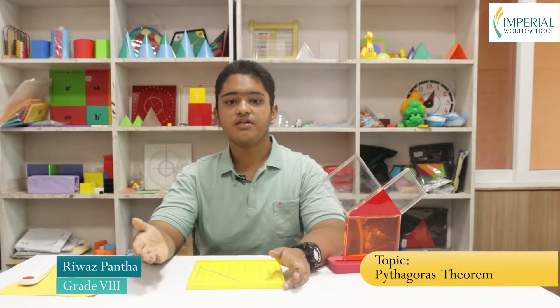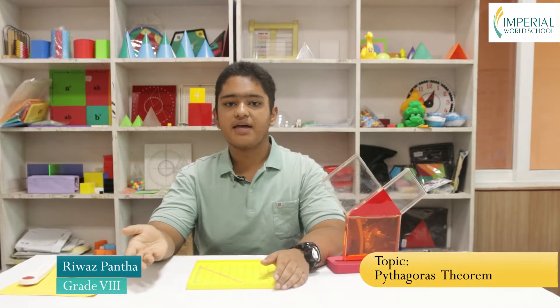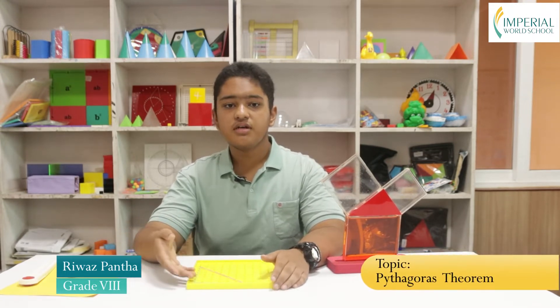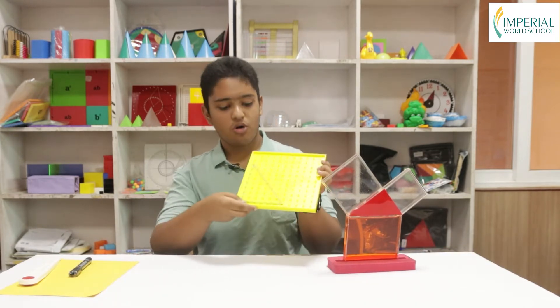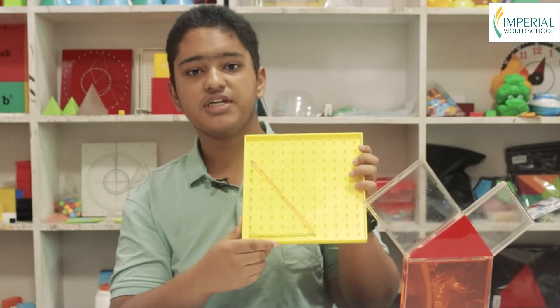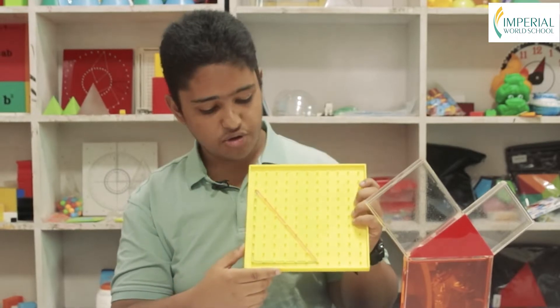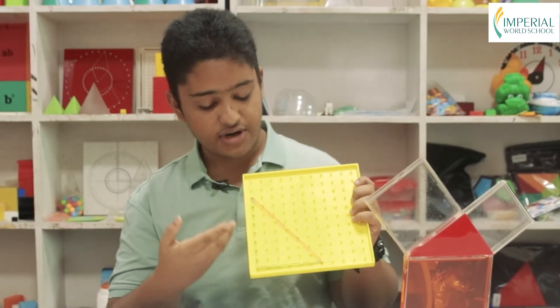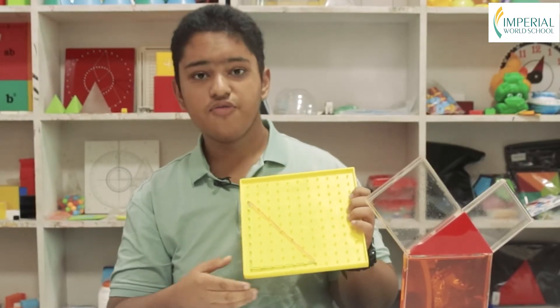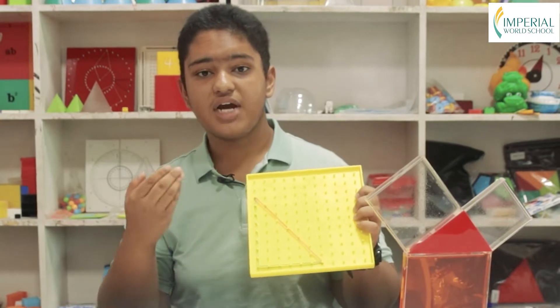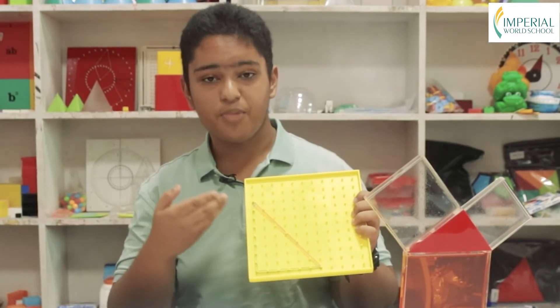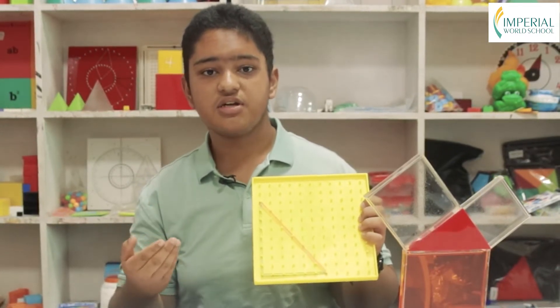So before we begin, we all know what the Pythagoras theorem is. If you don't, that is fine; if you do, that's even better. So here on this geoboard, you can see there's already a right angle triangle. We all know that a triangle has a hypotenuse, a perpendicular, and a base.